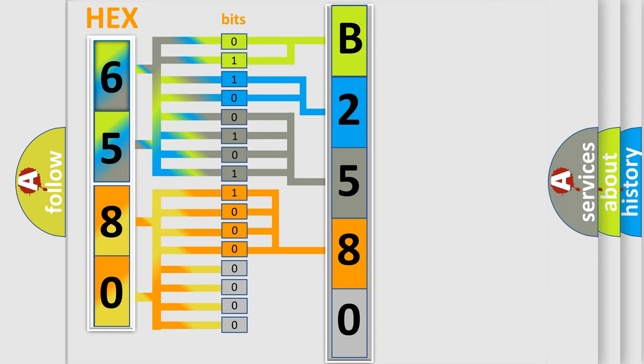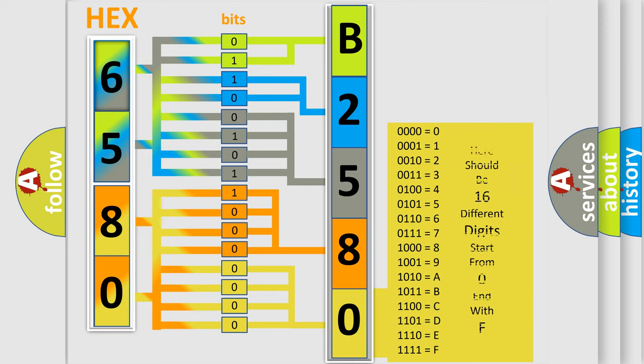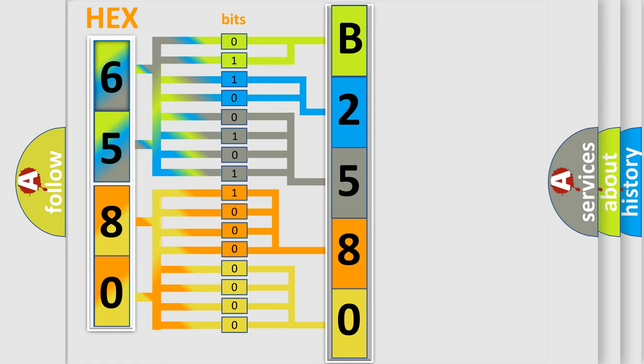A single byte conceals 256 possible combinations. We now know in what way the diagnostic tool translates the received information into a more comprehensible format.